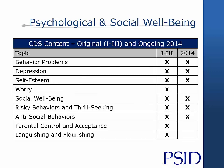Several scales of psychosocial well-being have been collected over time, including the Behavior Problems Index derived from the Achenbach Child Behavior Checklist, with subscales for internalizing and externalizing behavior, the six-item Children's Depression Inventory, as well as self-esteem and social well-being.